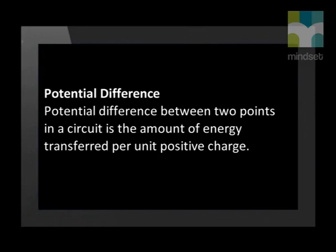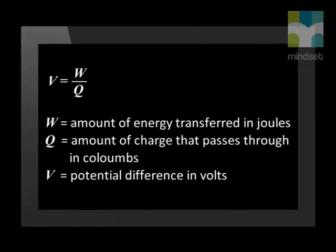The potential difference between two points in an electrical circuit is the amount of energy transferred per unit positive charge. V is equal to W over Q, where W is the amount of energy transferred measured in joules, Q is the amount of charge that passes through measured in Coulombs, and V is the potential difference measured in volts.